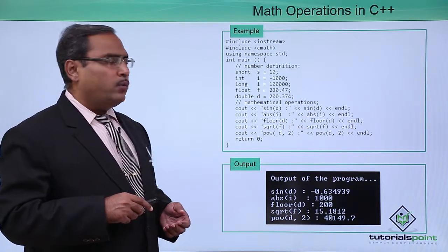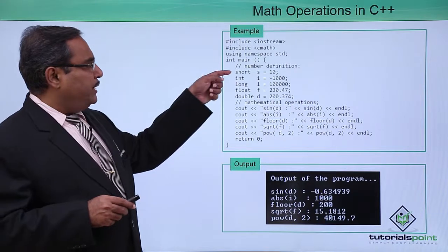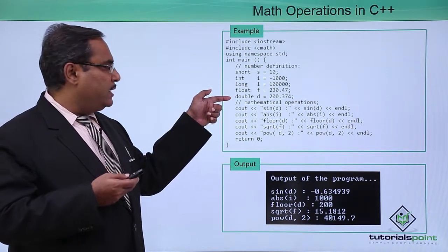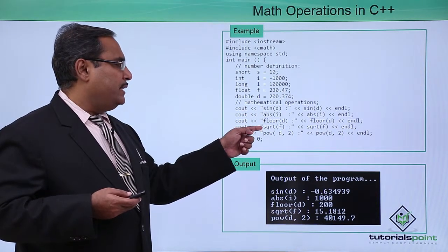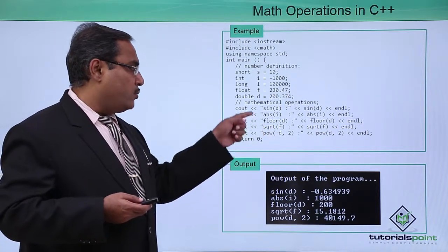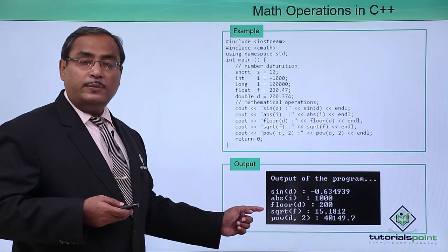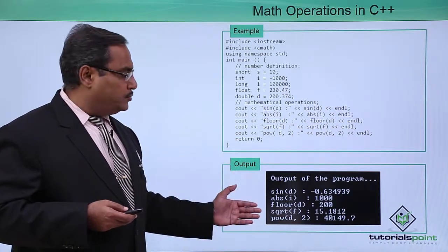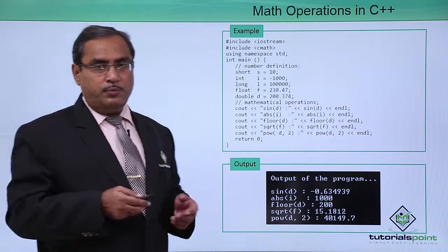Now let us look at a sample code for understanding. Here we have many different variables that have been initialized. I have used sin, abs, floor, sqrt, and pow on them to show what values they print. This is the respective output obtained. You can type this code, run it, and you will observe these outputs when the program is executed.